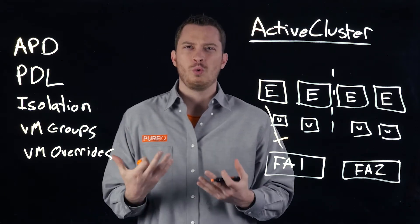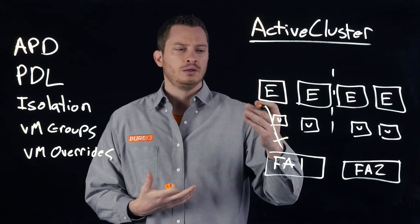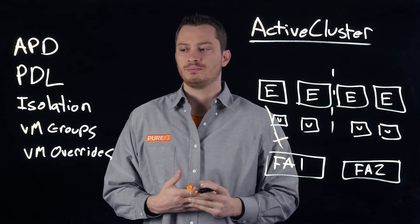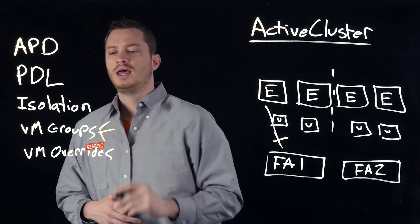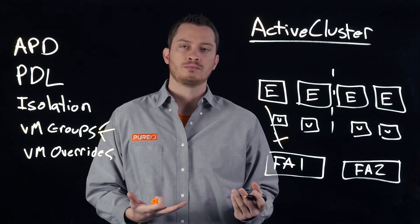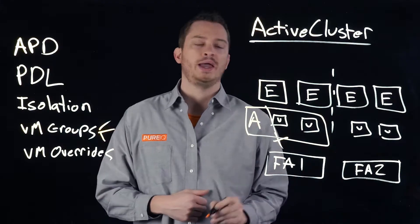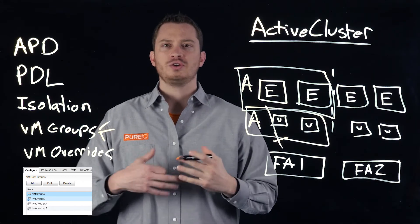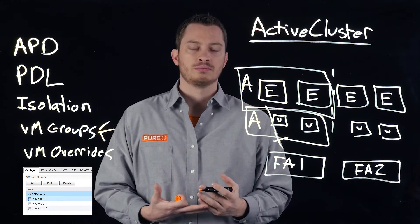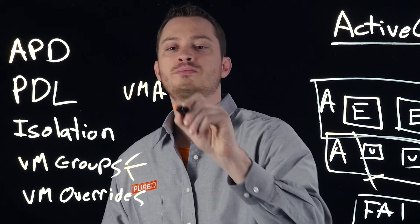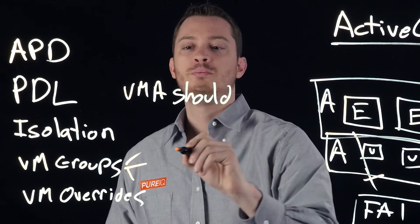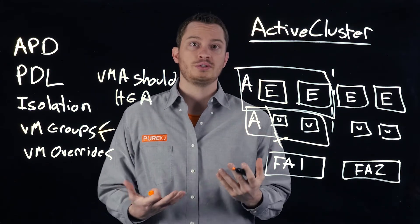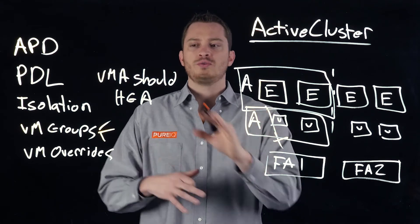Sometimes you might want to control where these VMs are. If host A fails but I don't want this VM to be failed over to the other site, there are ways to control that. vSphere HA has features called VM groups and host groups. I could say these VMs are part of VM group A, and these hosts are part of host group A. Then I can create what's called a VM affinity rule — VM group A should be on host group A. This makes sure that vSphere HA and vSphere DRS will try to respect this rule.